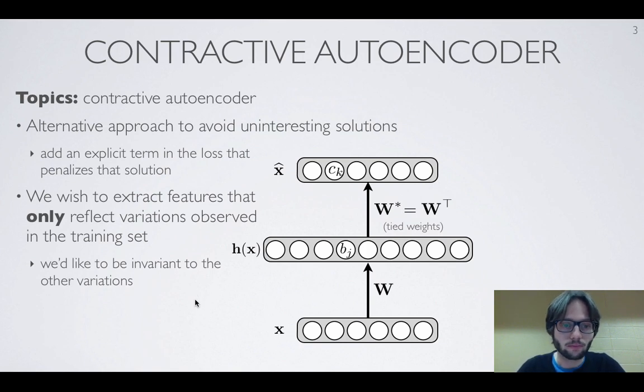Now in the contractive autoencoder, instead what we'll do is that we're actually going to try to explicitly avoid this uninteresting solution by adding an explicit term that penalizes that solution.